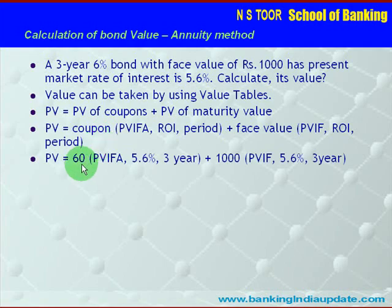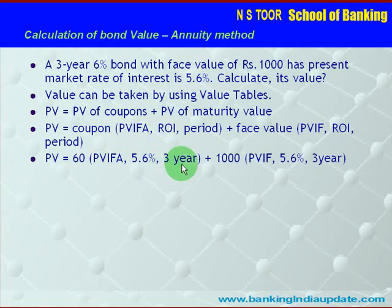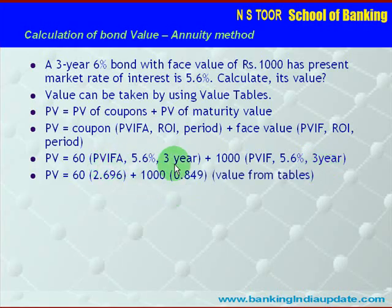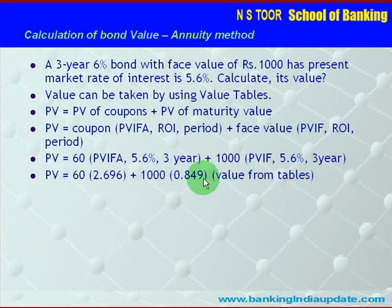The coupon is Rs. 60; we find the annuity factor at 5.6% for 3 years, because the current interest rate is 5.6%. The face value is Rs. 1000, discounted at 5.6% for 3 years. From the value tables, for the annuity portion we get the factor 2.696, and for the discounting portion we get the factor 0.849.